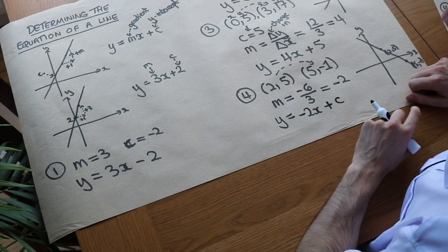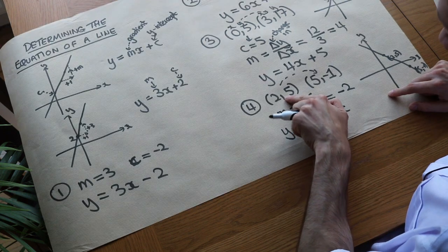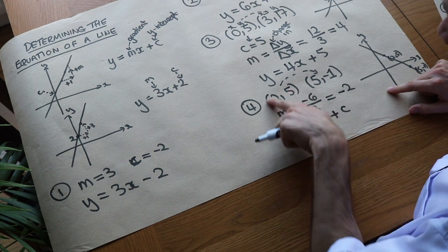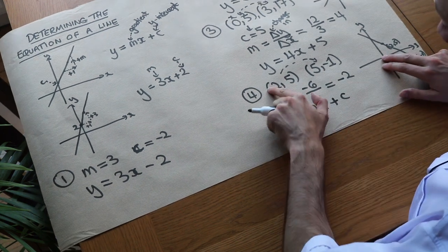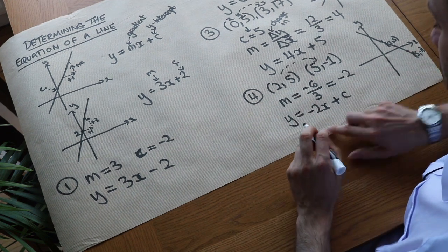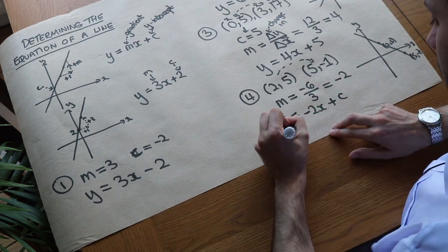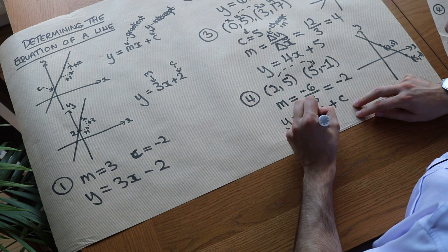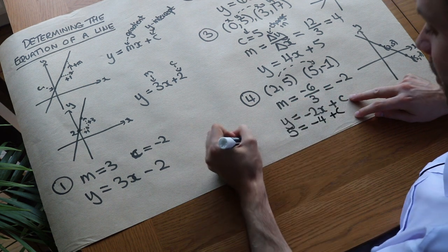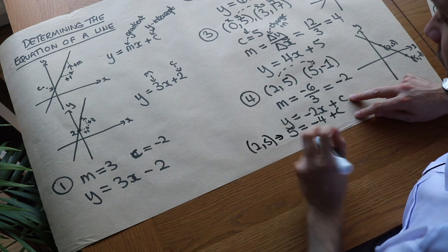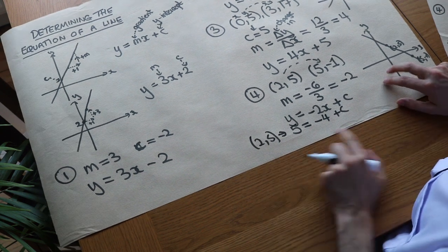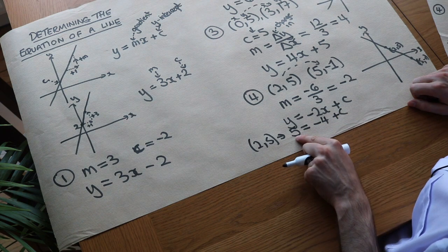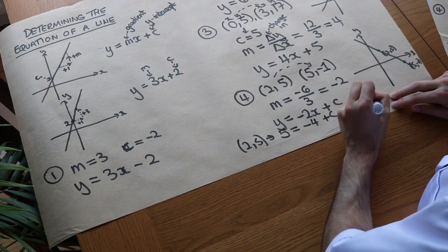What we do is pick one of the two points — either one works. Because that point belongs on this line, it must satisfy the equation. Picking the point 2, 5 and substituting in: y is 5, so 5 equals minus 2 times 2 plus c, which gives 5 equals minus 4 plus c. Now we can work out c: minus 4 plus what gives 5? It's 9. So c equals 9.